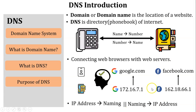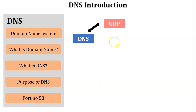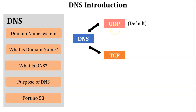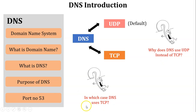DNS uses port number 53. The DNS process uses port 53 with both UDP and TCP protocols, but UDP is the default protocol in DNS because immediate response is required, and UDP is faster compared to TCP. Two questions to consider: Why does DNS use UDP instead of TCP? And in which cases does DNS use TCP instead of UDP?